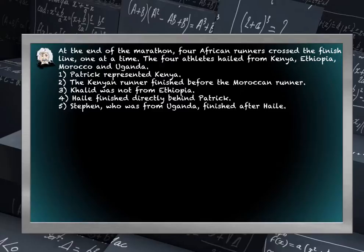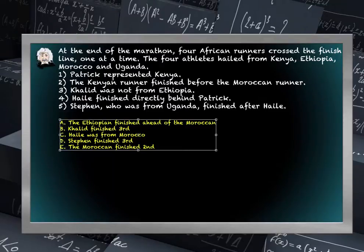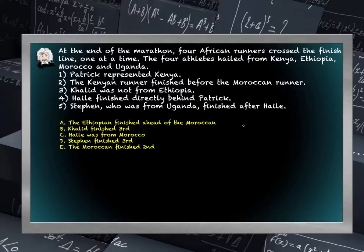Patrick represented Kenya. The Kenyan runner finished before the Moroccan runner. Khalid was not from Ethiopia. Hele finished directly behind Patrick. Stephen, who was from Uganda, finished after Hele. The question asks: which of the following must be true? The Ethiopian finished ahead of the Moroccan runner; Khalid finished third; Hele was from Morocco; Stephen finished third; or the Moroccan finished second.